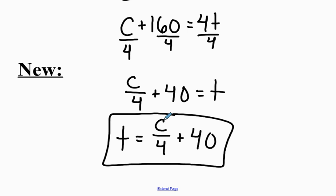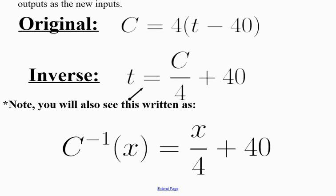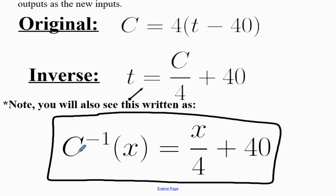We call this the inverse function. This new equation is called the inverse function because it takes the original output as the new input. The original equation takes T as input and returns a chirp rate; the inverse takes C as input and returns a temperature — the exact opposite of before. The book writes the inverse using a negative 1 exponent to mean inverse. So C inverse of x equals x divided by 4 plus 40.